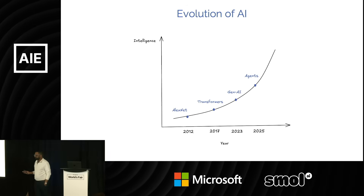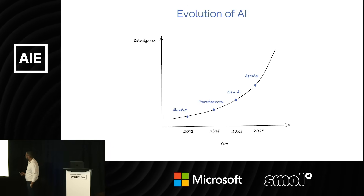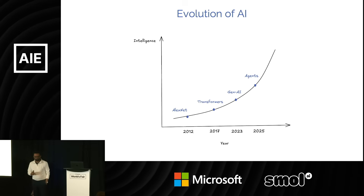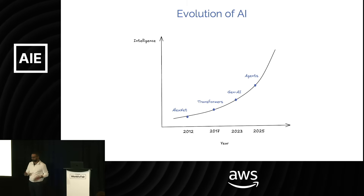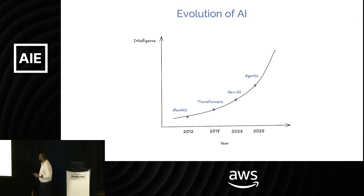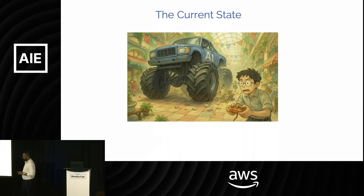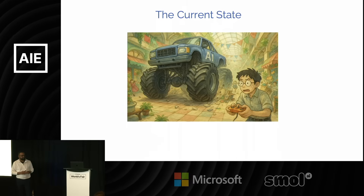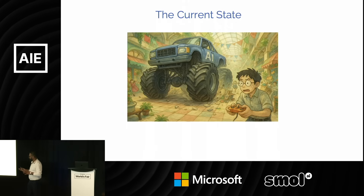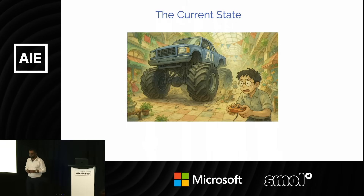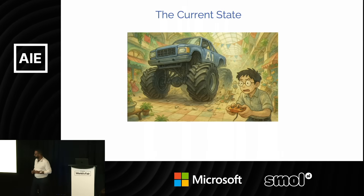In the last few years, we have seen tremendous growth in AI. And especially in the last couple of years, we are on an exponential curve of intelligence growth. And yet, it feels like when we develop AI applications, it's like driving a monster truck through a crowded mall with tiny joysticks. So AI applications have not seen their ChatGPT moment yet.